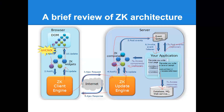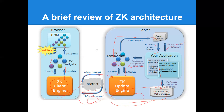You need to understand this process so that when something happens, you can form a good analysis and hypothesis. Through this process, you can see there are three categories of problems: the problem could be client-side, network, or server-side. All ZK problems can basically be divided into these three categories.